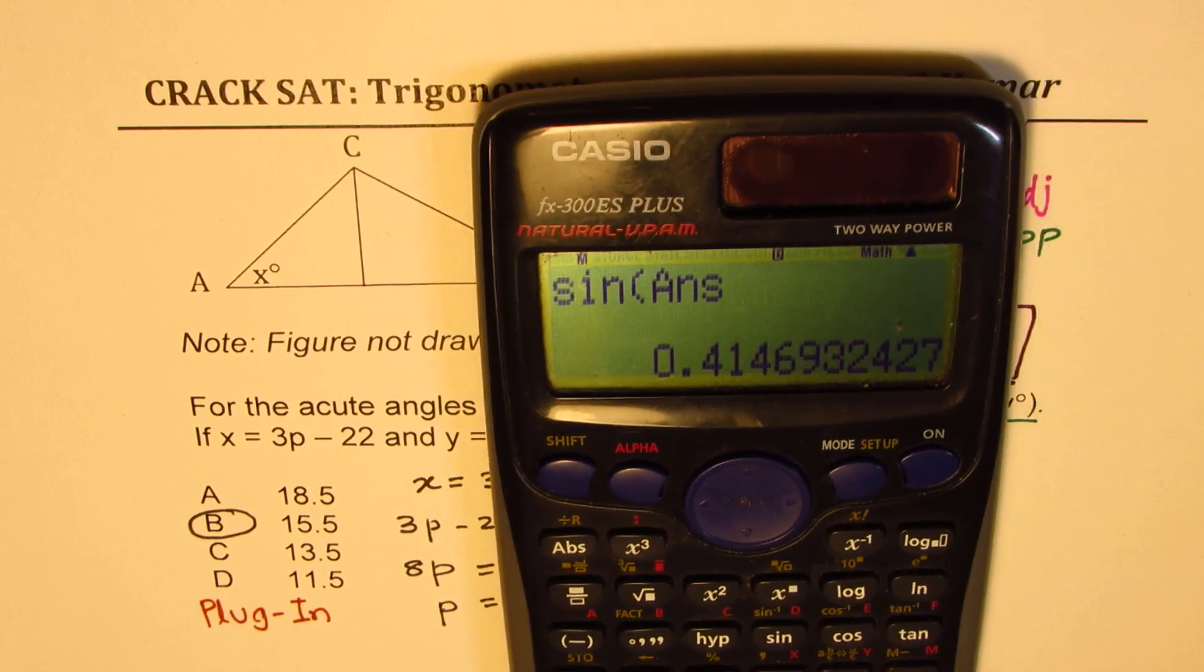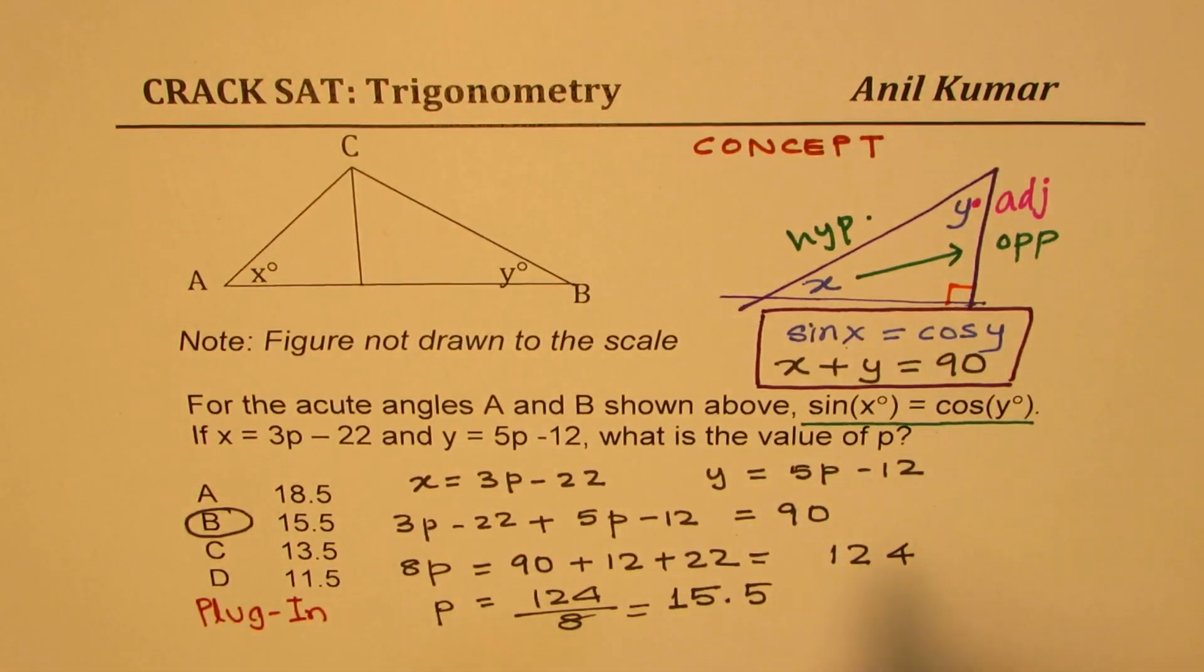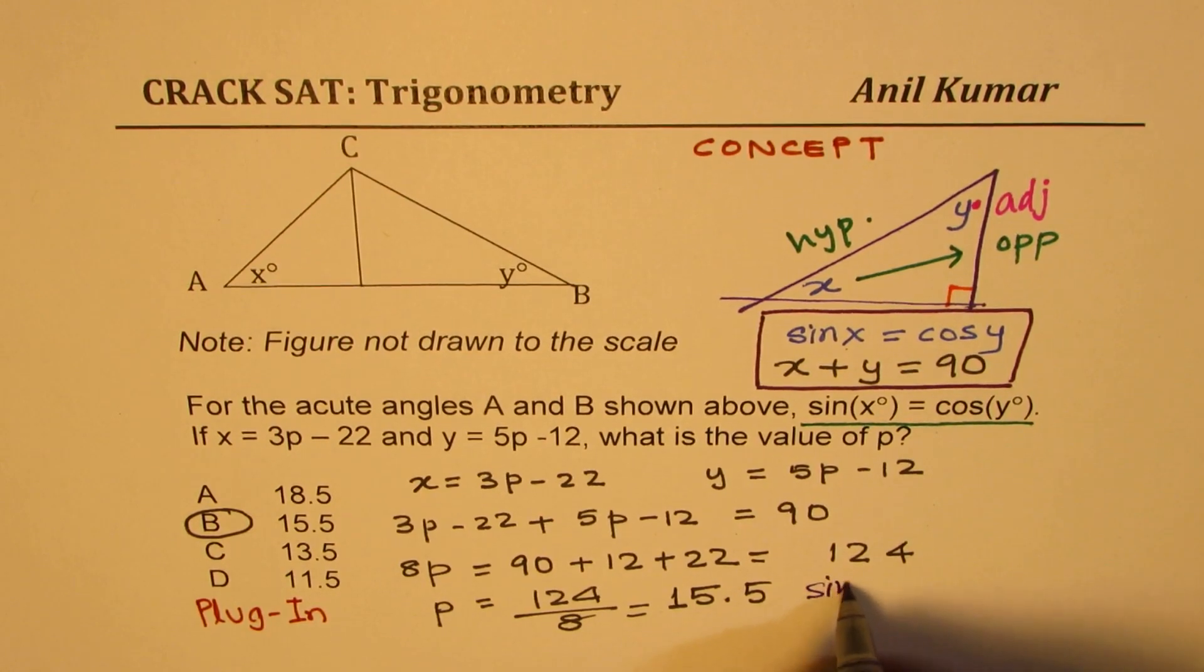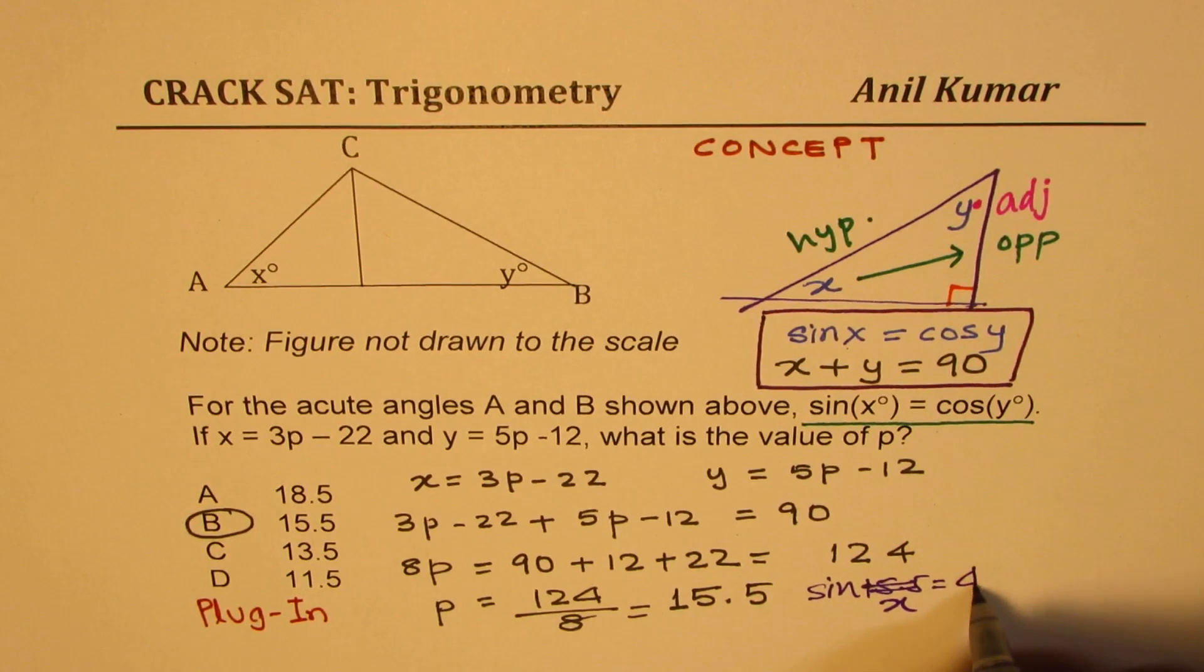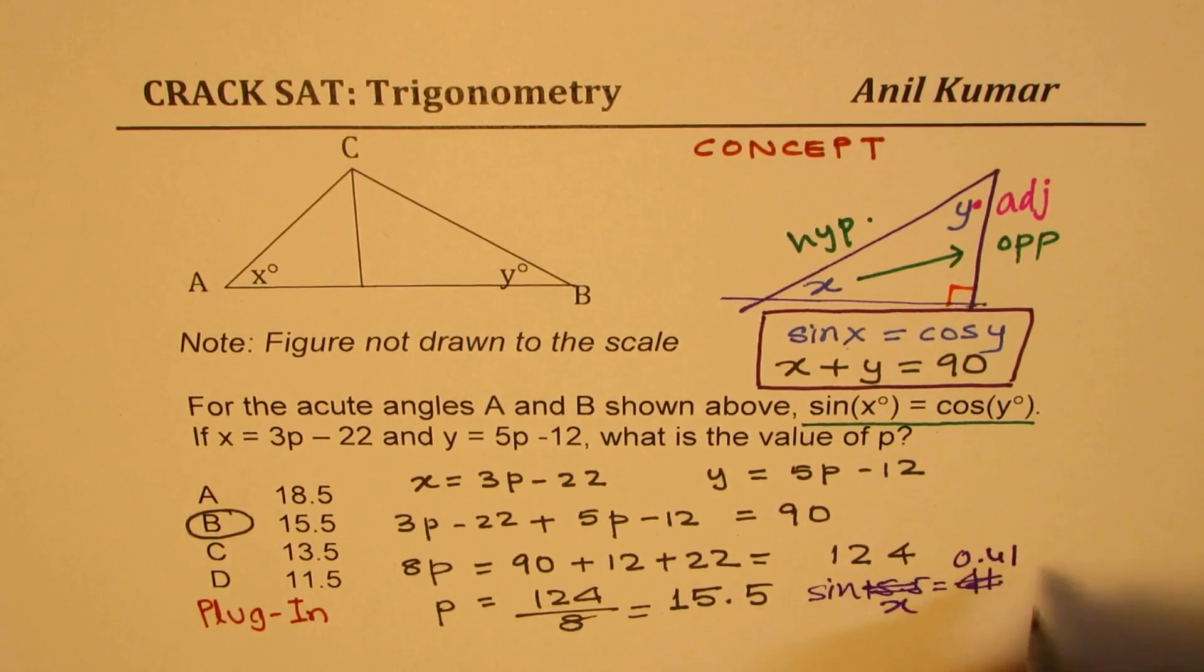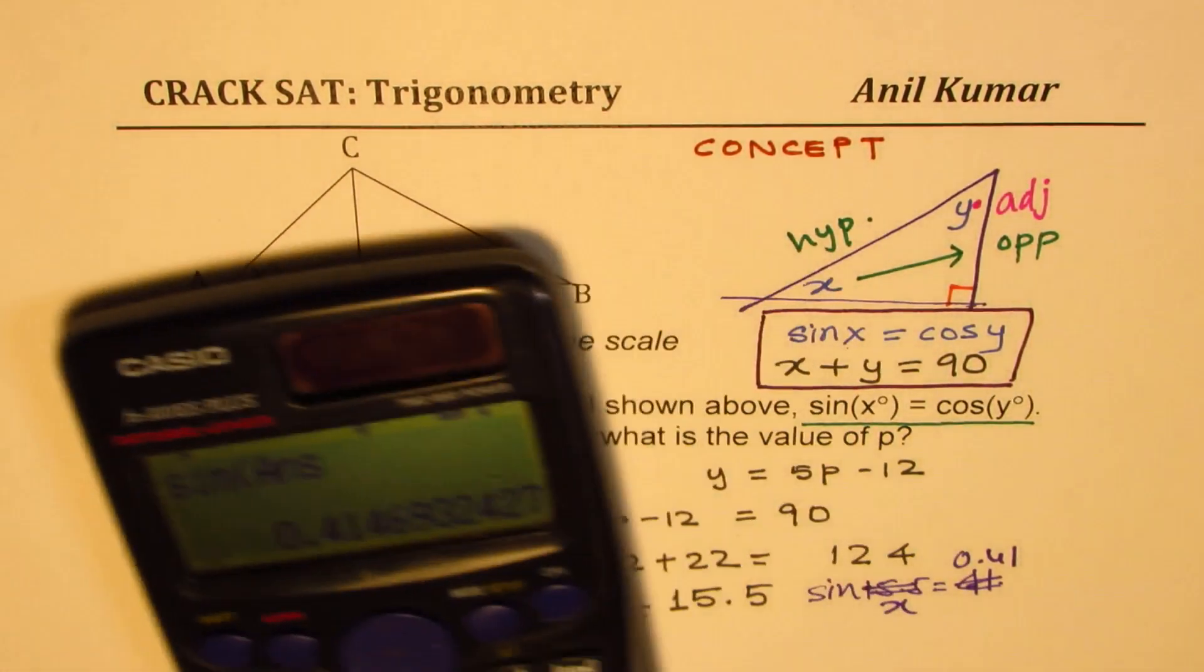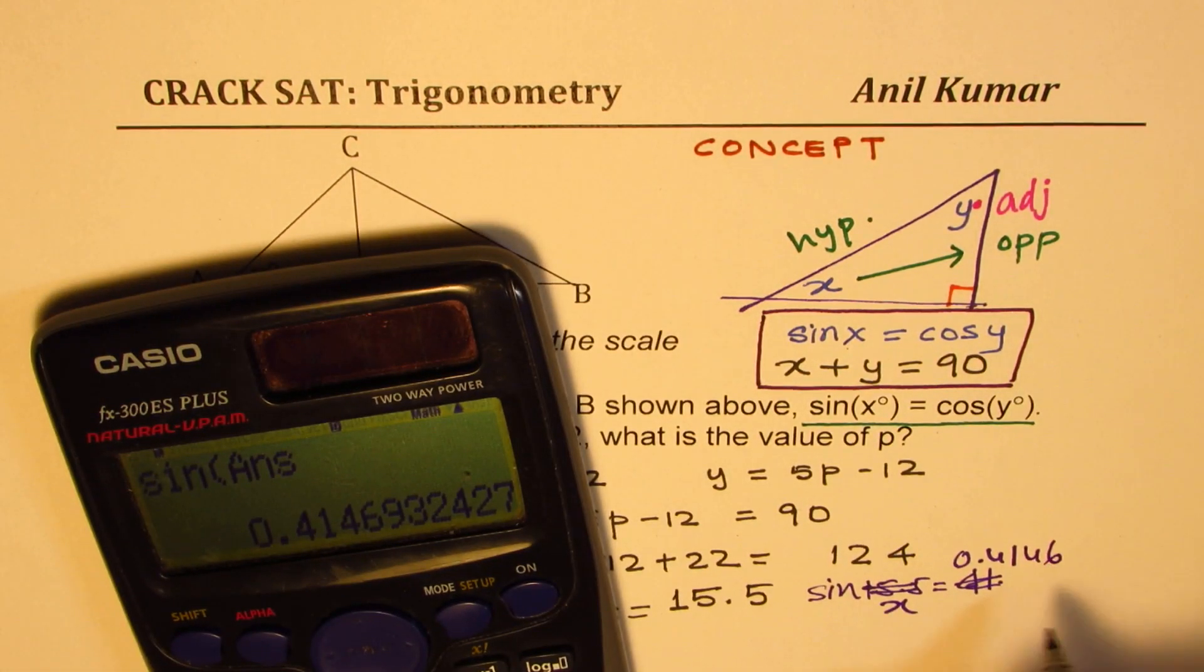So we get a value of 41.46. So we know sine of, I'm sorry, sine of x is 41.46, or 0.41, 0.41, okay. So we get 0.4146, right. So we're just confirming our answer.